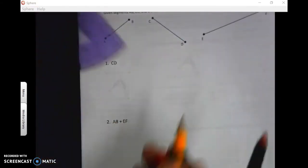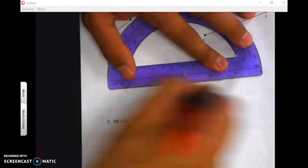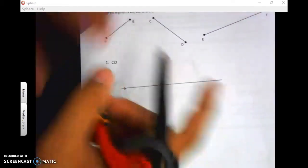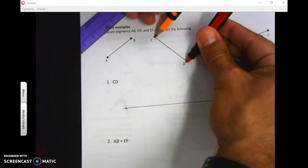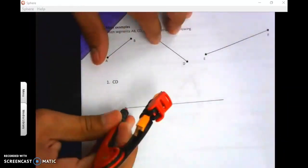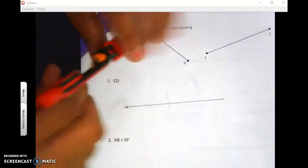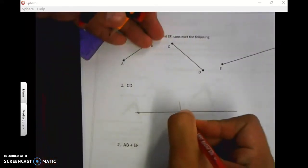On number one, CD: once again, draw a long line, put a point. You want to measure from C to D like this, and then you just bring it down, make a little arc, and there is your new point. That would be CD. Now what do you think we do for AB plus EF?